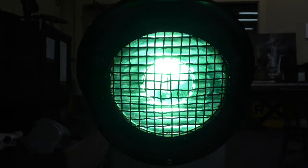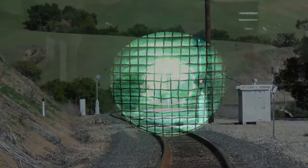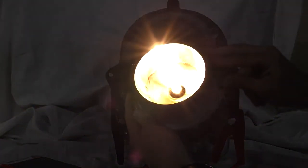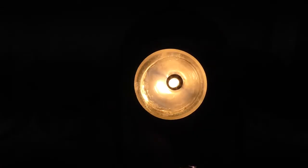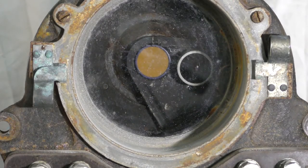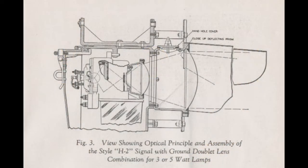Searchlight signals were one of the earliest successful types of color light signals. Their success was due to the fact that with a single small light bulb running on only 12 volts DC, each signal head could display up to three colors and be visible from over a mile away in broad daylight. Each H2 searchlight signal accomplishes this through the use of a parabolic reflector surrounding the bulb, which reflects most of the bulb's light through the signal's color armature, and then through two lenses which refract the light into a bright narrow beam.